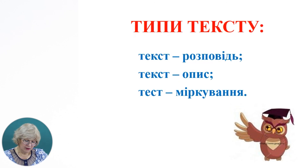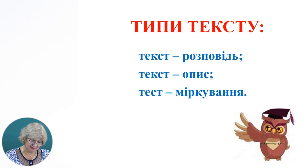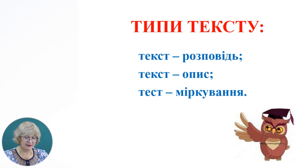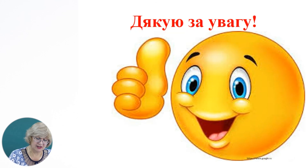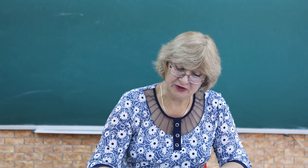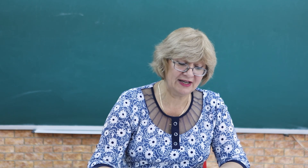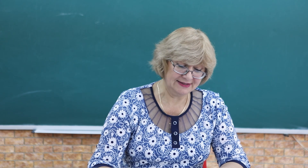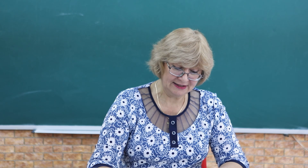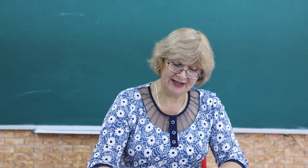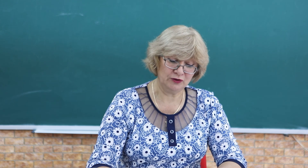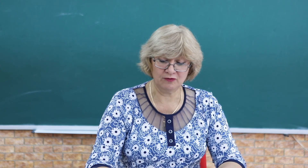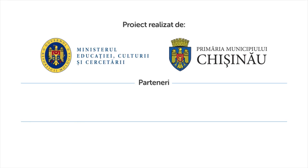Пригадаємо, про що дізналися на уроці. На уроці ми ознайомилися з типами текстів: текст-розповідь, текст-опис, текст-міркування. Ми говорили за текст-розповідь — текст, в якому повідомляється про щось чи про когось, складається з трьох частин: зачин, основна частина і кінцівка. Текст-розповідь відповідає на питання «що сталося», «що відбулося». Дякую, діти, за увагу. До побачення.